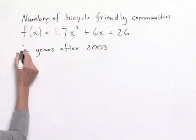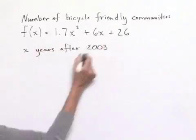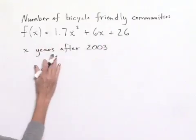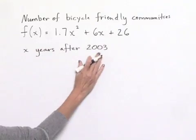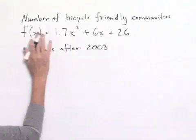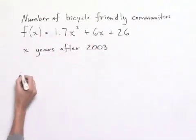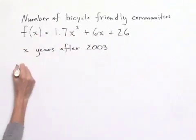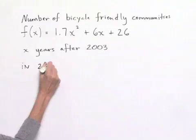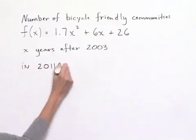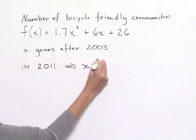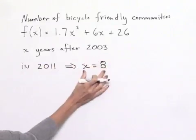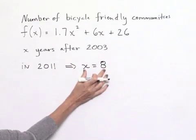We're going to use the model f(x), where x stands for the number of years after 2003 and f(x) stands for the number of bicycle-friendly communities. We're asked to find the number of bicycle-friendly communities in 2011. In 2011, that would be 8 years after 2003, so our value will be x = 8.